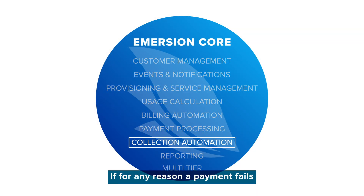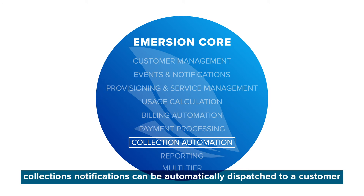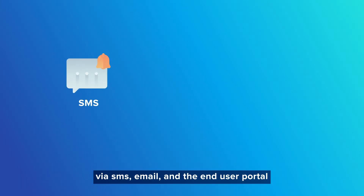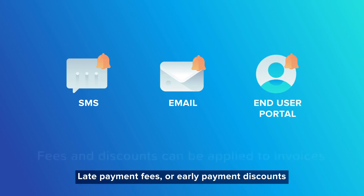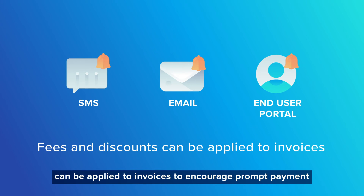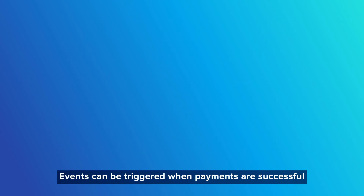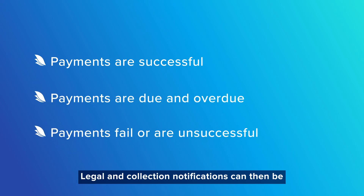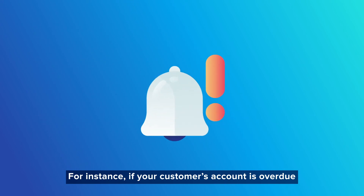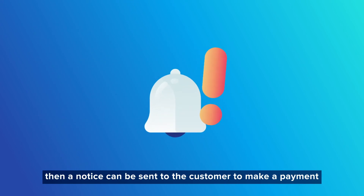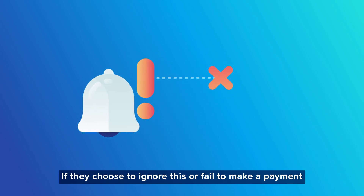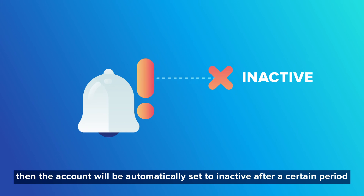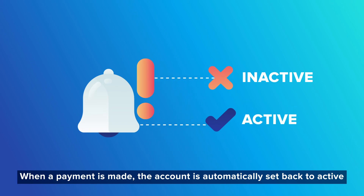Collection automation: If for any reason a payment fails, collection notifications can be automatically dispatched to a customer via SMS, email, and the end user portal. Late payment fees or early payment discounts can be applied to invoices to encourage prompt payment. Events can be triggered when payments are successful, when they are due and overdue, or when payments fail. Legal and collection notifications can then be automatically sent to your customer as required. For instance, if your customer's account is overdue, a notice can be sent to the customer to make a payment. If they choose to ignore this or fail to make a payment, then the account will be automatically set to inactive after a certain period. When a payment is made, the account is automatically set back to active.